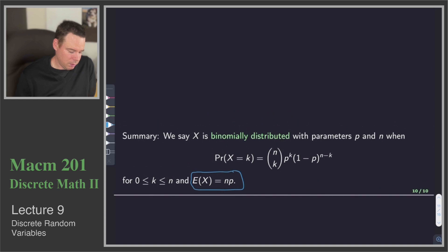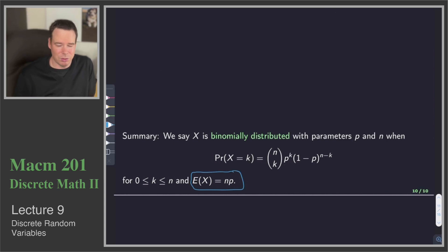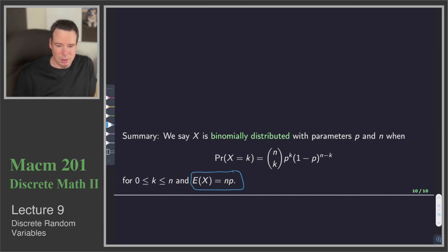So those are our two common distributions for random variables: the geometric distribution and the binomial distribution. In the next lecture, lecture 10, we will look at two more examples of experiments on sample spaces where we'll see geometric and binomial distributions come up, and we'll be able to use these results we've just derived. Thanks for watching and we'll see you in the next lecture.